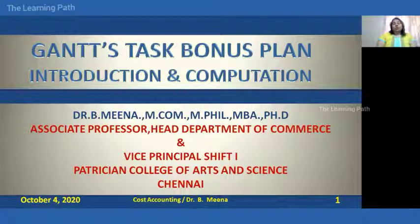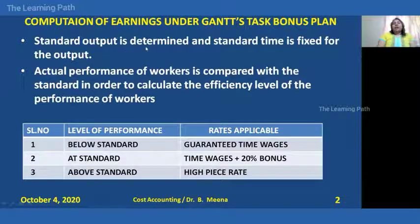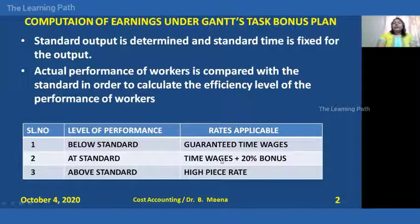Let me explain how to work out the earnings of workers under the GANS task bonus plan. The very first step is we need to determine the standard output — the standard time is fixed for that output. Once we find the standard output fixed by the company, it is compared with the actual performance of the workers to calculate their efficiency level. If any worker is below standard, as per the GANS plan, they will get only the guaranteed time wages. If a worker is equal to the standard, they will get time wages plus a 20% bonus.